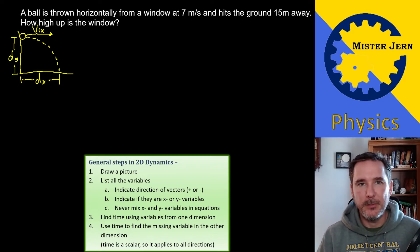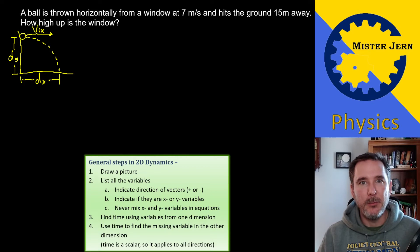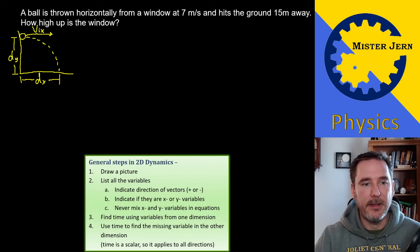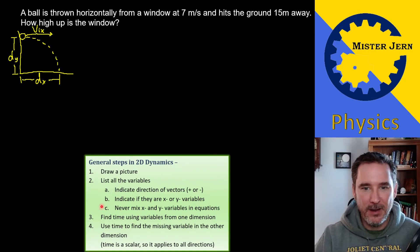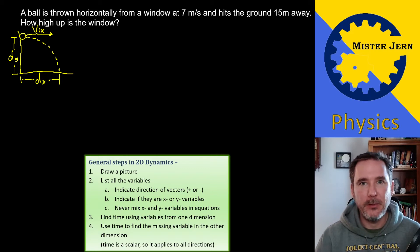Okay, so this will help us to sort of envision what's going on and list our variables for us, because that's our next step. And when we do that, indicate the direction of any vectors, which we will have a couple. Indicate if they are x or y variables. Very important because you should never mix the x and y variables because they are at 90 degrees to each other and so they don't interact.